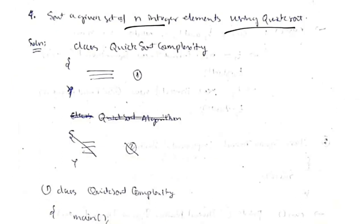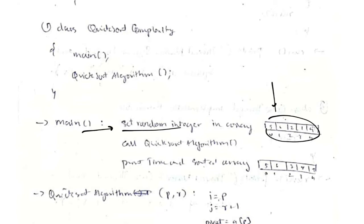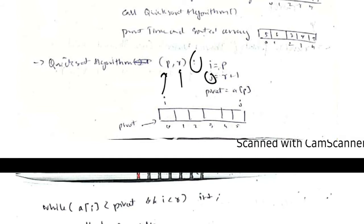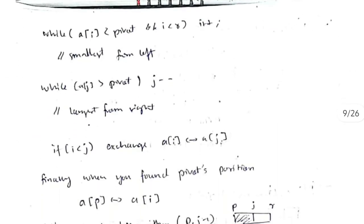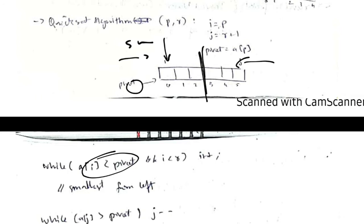For the fourth program, we sort n integers using Quick Sort. We have one class, QuickSort, with two functions: main and the quickSort algorithm. In main, we create a random integer array, call quickSort, print the time taken, and print the sorted array. In quickSort, we have variables p and r initialized as i and j, where i is the first node and j is the last. The pivot element is always the first node. We travel from the left while a[i] < pivot and i < r, finding elements smaller than pivot.